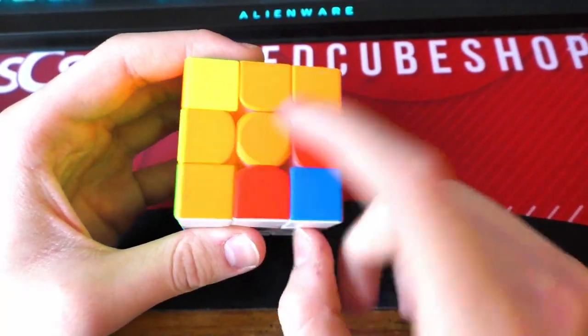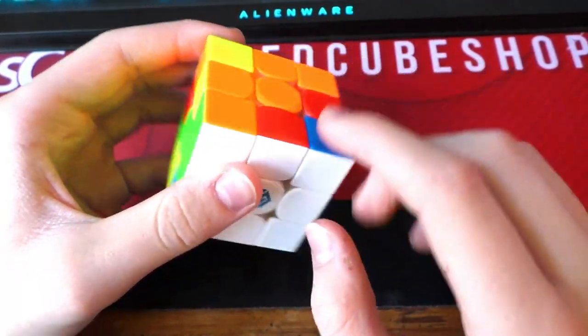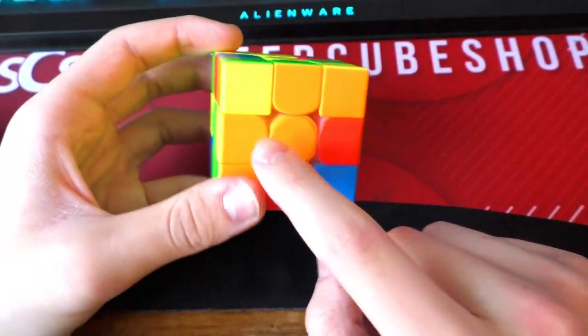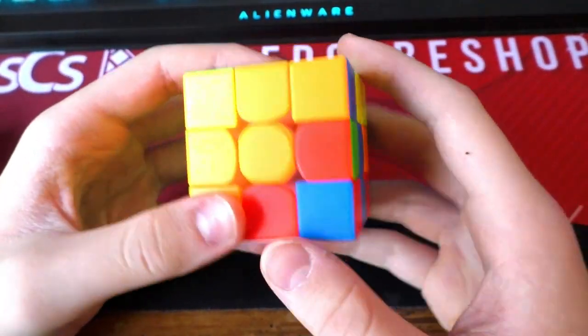And next you just have to choose a random side, like let's say orange. Okay, so orange. First you want to fix this piece because you want to make sure that the white side is solved as you solve the orange side. So you can do this.